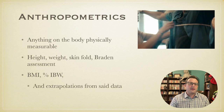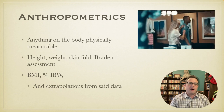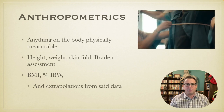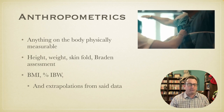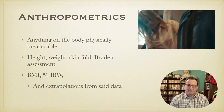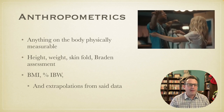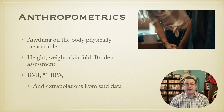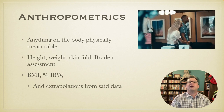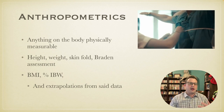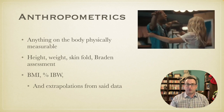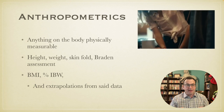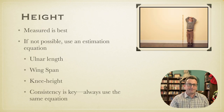Anthropometrics are anything on the body that is physically measurable — height, weight, skinfold, Braden assessment. It's also any data point you can extrapolate from those numbers, such as BMI or percent ideal body weight. If you can take hard numbers and come up with another one that describes a physical body, that is an anthropometric measurement.